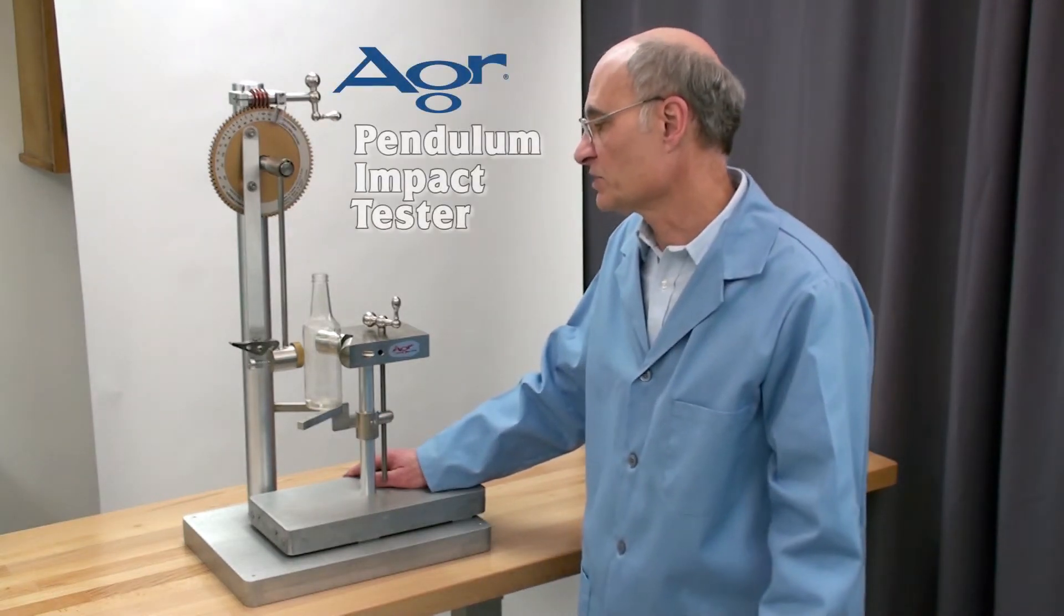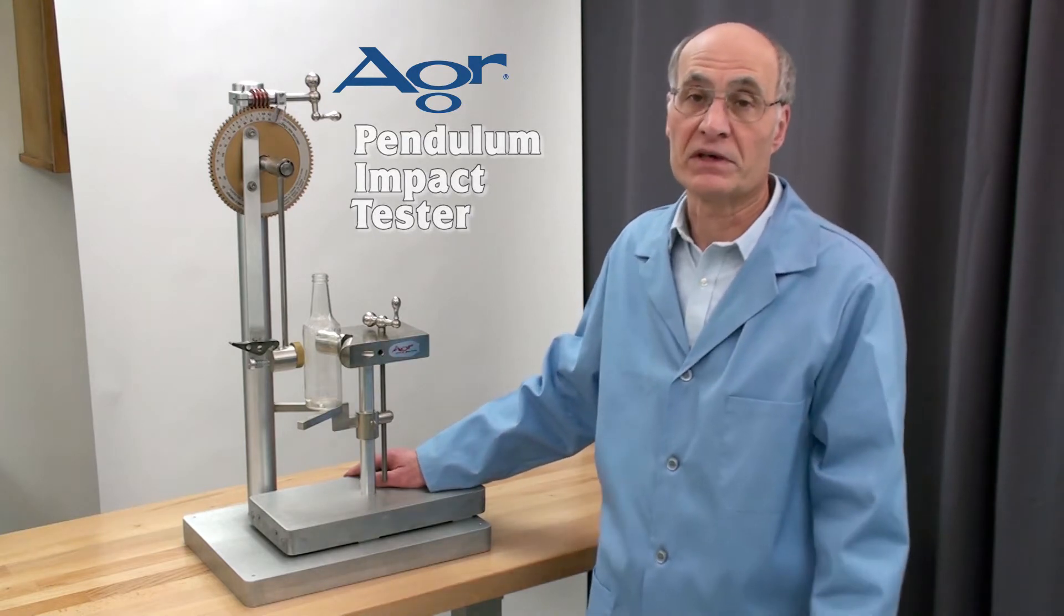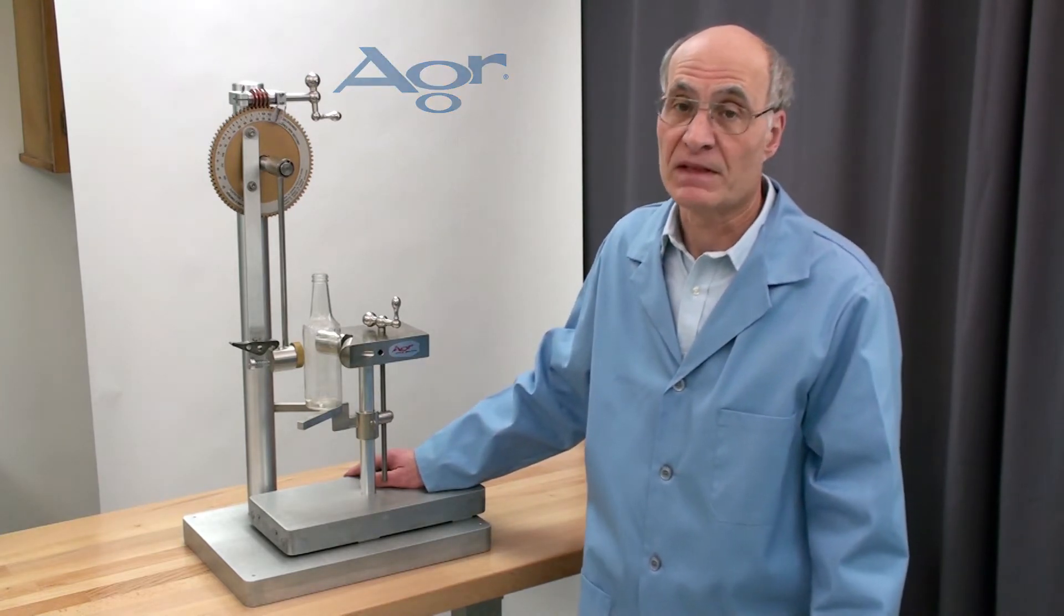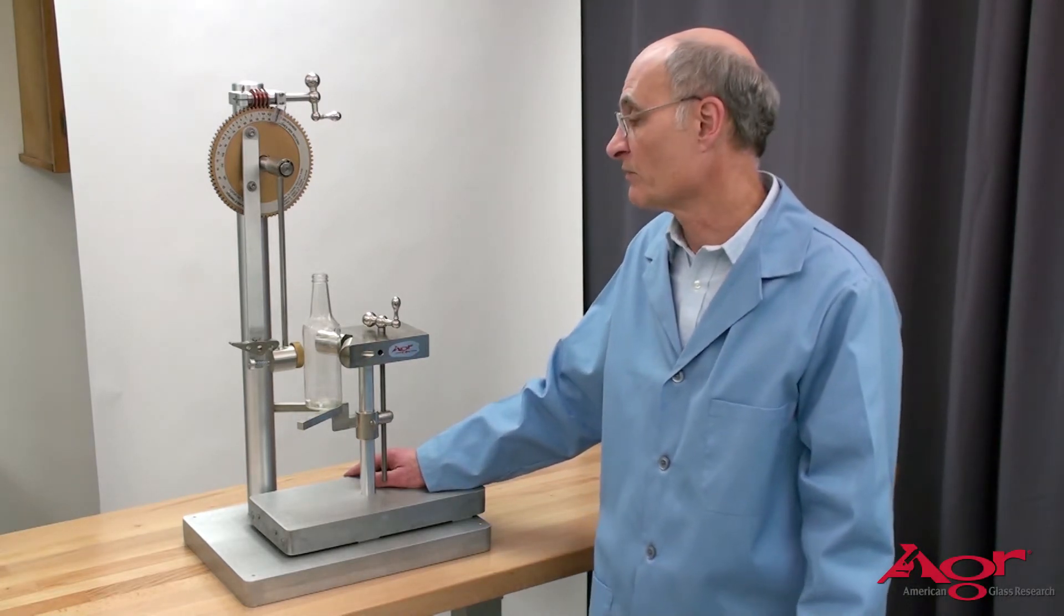This is the AGR pendulum impact tester. It's a real good method for evaluating impact resistance of bottles. There's not a lot of adjustments to make. There's three primary adjustments you have to be aware of first.